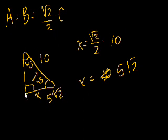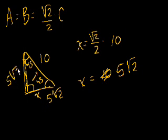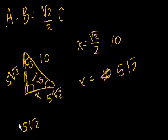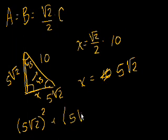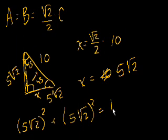We know that this side and this side are equal — it's an isosceles triangle because these two angles are the same. So we also know that this side is 5√2 as well. If you're not sure, let's try the Pythagorean theorem: 5√2 squared plus 5√2 squared is equal to the hypotenuse squared, where the hypotenuse is 10, so that's 100.